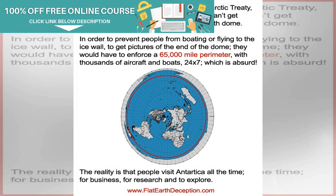But in diagrams shared on the FES website, the planet appears as a pancake-like disk with the North Pole smack in the center and an edge surrounded on all sides by an ice wall that holds the ocean's back.